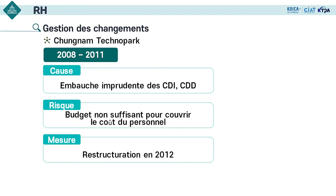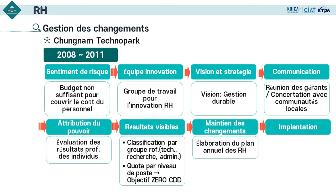Concernant la gestion des changements, voici quelques cas d'échecs de Chungnam Technopark entre 2008 et 2011 — une période où notre organisation s'est soudainement agrandie. Nous avons recruté beaucoup d'employés en CDD et CDI, mais après le recrutement, nous avons découvert que le budget n'était pas suffisant pour couvrir le coût du personnel. Nous avons donc exécuté une restructuration en 2012. Nous avons eu le sentiment de risque, organisé le groupe de travail pour l'innovation RH, et notre vision était la gestion durable. Tout le monde était paniqué — notre direction s'est réunie pour trouver des solutions.